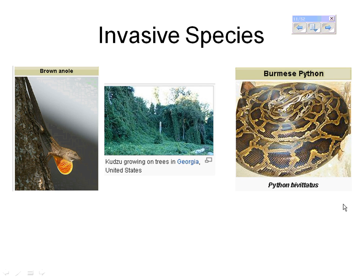For number 4, it says discuss major problems with invasive species. One of the major problems is that they compete with the native species. Don't forget that invasive species are non-native species that are brought over either on accident or on purpose to a new area. Many times they don't have any natural predators, and so they are able to increase in number and out-compete the native species.